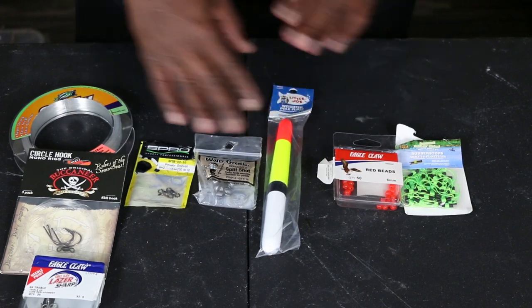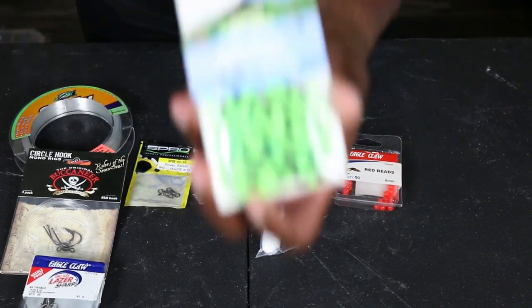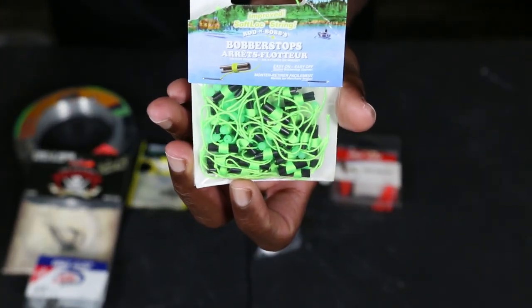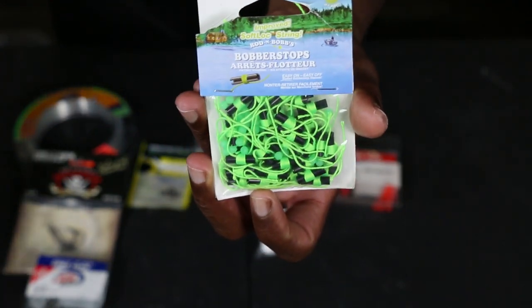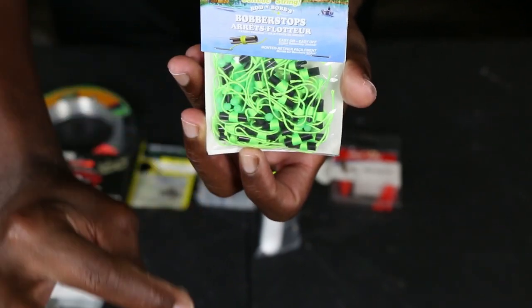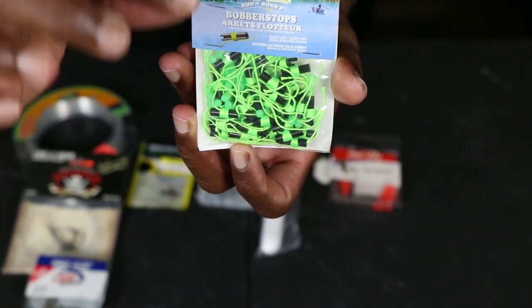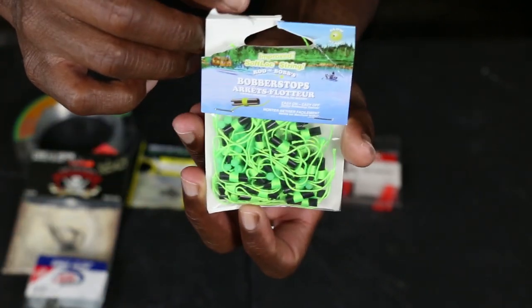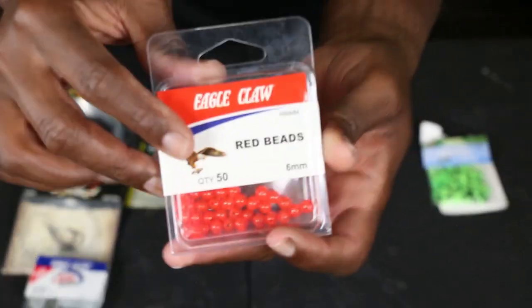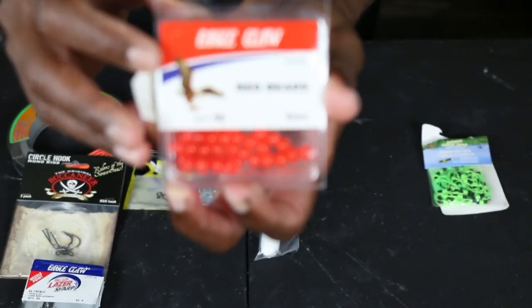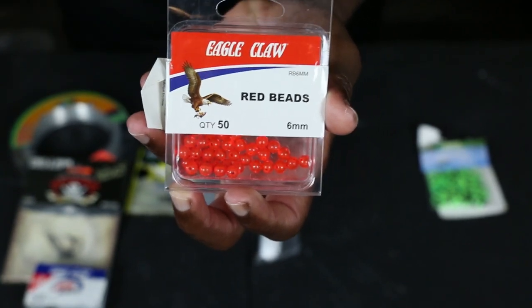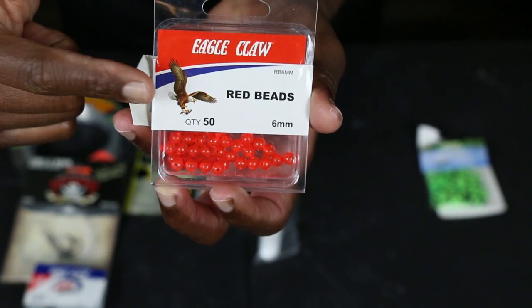Alright, so let's get started. I have everything laid out as far as what you're gonna need. First things first, we have these bobber stoppers. You can find these at Academy, they're like three dollars for like 50 of them. I'll show you how I actually install these. What these allow you to do is not only will it stop your bobber, you can slide this along your mono or your braid to adjust the depth of what you need. Next is just some regular beads, I use the six millimeter beads. You can get these at Academy as well.